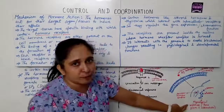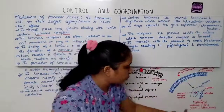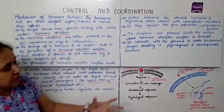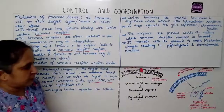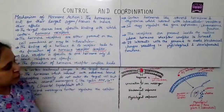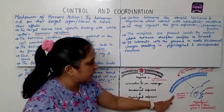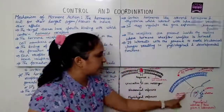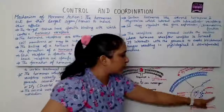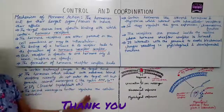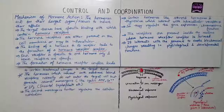The hormone-receptor complex interacts with the genome, bringing physiological and developmental functions — such as tissue growth and differentiation. This physiological change takes place because of the receptor-hormone complex acting inside the nucleus. This is the mechanism of hormone action. Thank you.